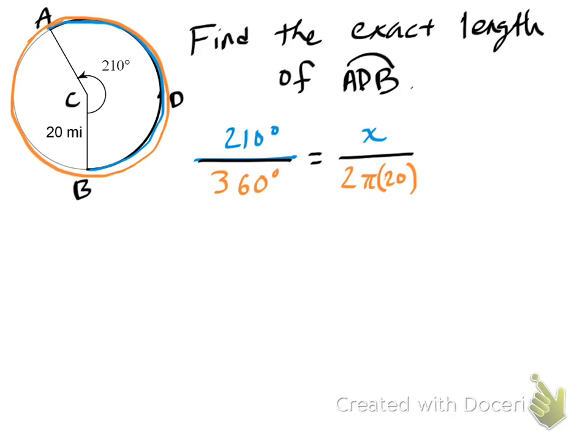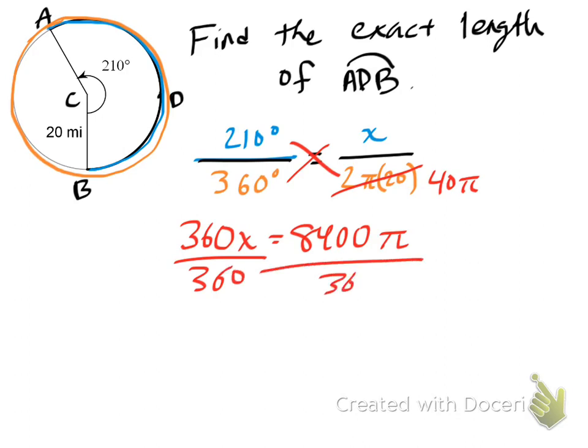Cross-multiplying these proportions will give us 360x equals, let's see, this is 40π, 40 times 210, and for an exact answer here, it's 8,400. Bring the π along. Divide both sides by 360. And that gives me, let's see, 8,400 by 360 is a fraction 70 thirds. 70 thirds π. And there you go. There's the exact length of the arc.